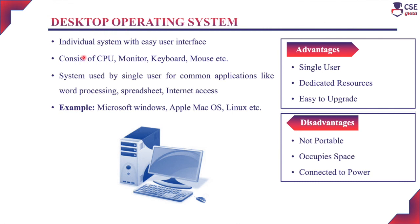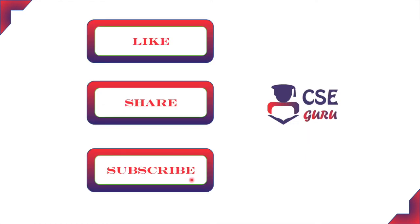Next, desktop operating system. These systems are individual user systems with an easy user interface. It consists of CPU, monitor, keyboard, mouse, etc. These systems are used by a single user for common applications like word processing, spreadsheet, internet access, etc. Since this system is used by a single user only, available resources will be dedicated to that user only, so no resource sharing is required. Examples: Microsoft Windows, Apple Mac OS, Linux, etc. Advantages: it is a single user system and the available resources will be dedicated to that individual user only; whenever an upgrade is necessary, it is easy to upgrade. Disadvantages: it is not portable, it occupies space, and it should be connected to power to work. These are all the different categories of operating systems in use. Thank you for watching this video.